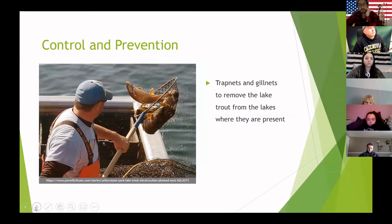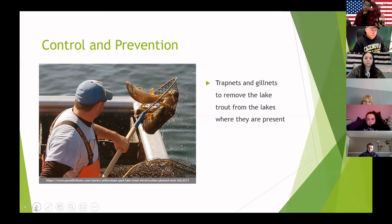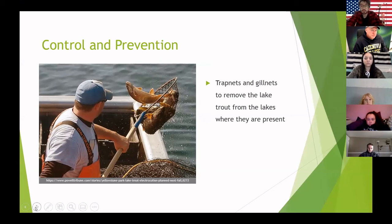The main control method used is trap nets and gill nets to remove or kill the lake trout. In the past two decades, about $20 million has been spent trying to control them, and since their discovery, more than 3 million have been removed from Yellowstone Lake.